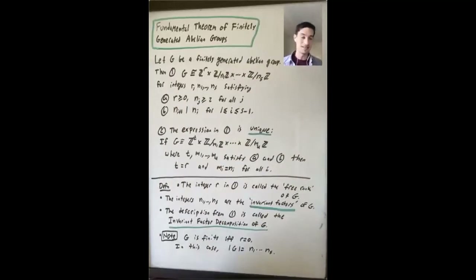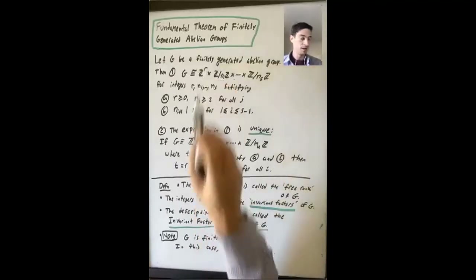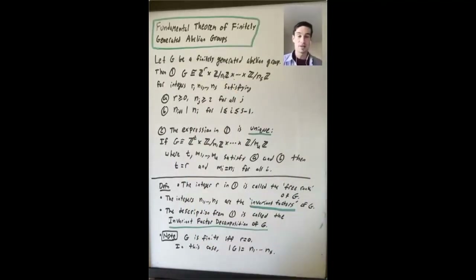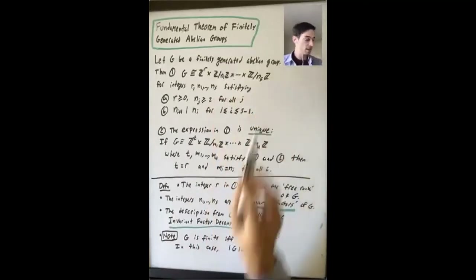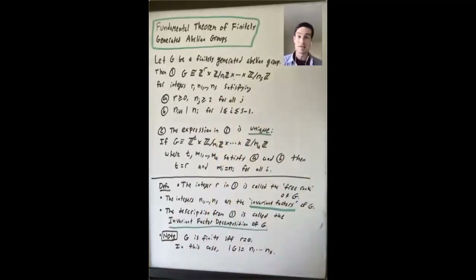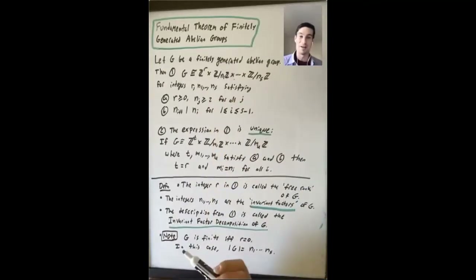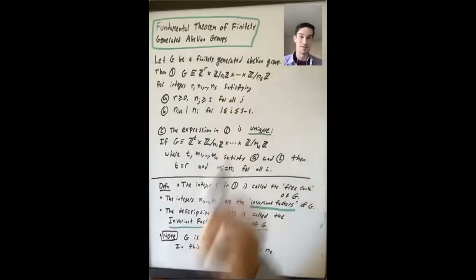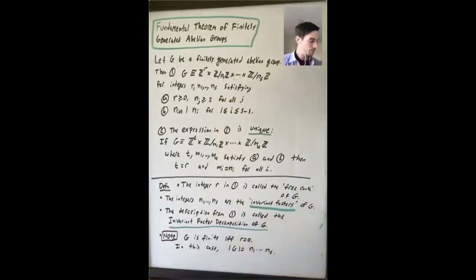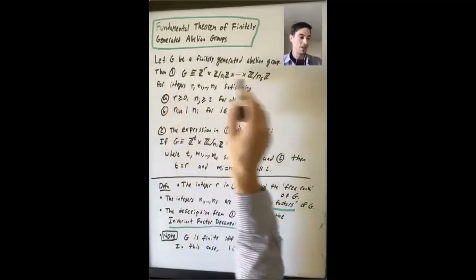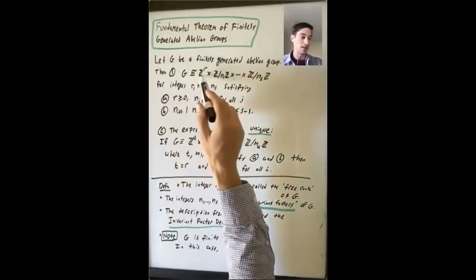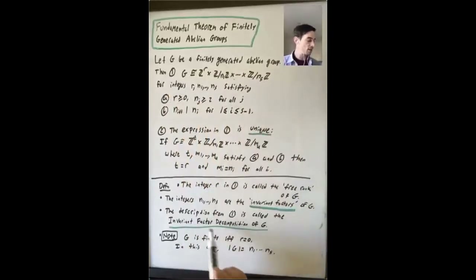Before going on to examples, let me set some notation. This integer R is called the free rank of G — that's a term I won't use very much. The integers N1 through NS are called the invariant factors of G, and that comes up much more. These questions about finite abelian groups show up in research, and invariant factors are a good thing to understand. This way of writing G as a direct product is called the invariant factor decomposition of G.